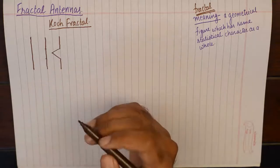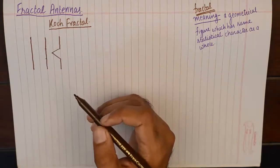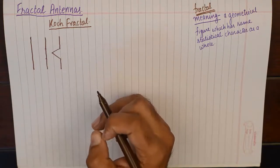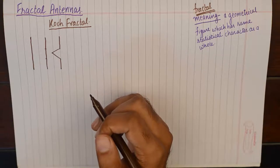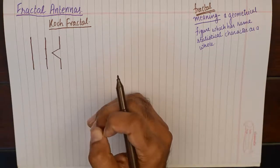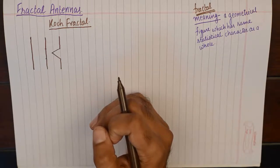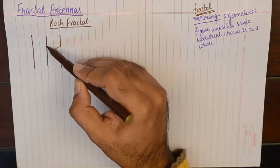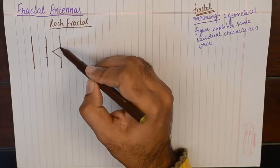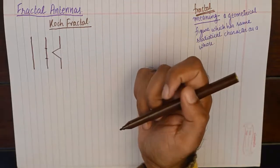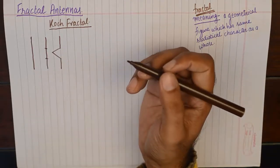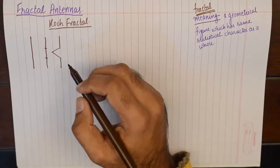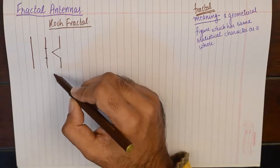Before we design a Koch fractal, it is important to understand the theory behind it, which says that a Koch curve is generated by replacing the middle third of each straight line with a bent section of wire. That is what I have done here — I have taken the middle third and replaced it with a bent wire section. I am going to do that progressively as I move from one iteration to the next.